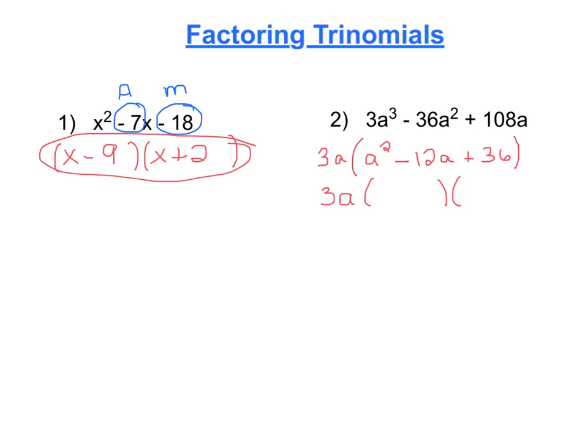Bring down the 3a. Let's open up two sets of parentheses. Since a times a is a squared, let's make this an a and this an a. Then we have to come up with two numbers that multiply to the last term, so multiply to positive 36 and add to negative 12. So negative 6 and negative 6. We have a minus 6 and a minus 6. So this right here is your answer. Remember to always bring that 3a down because that's part of your answer. That's a factor there.